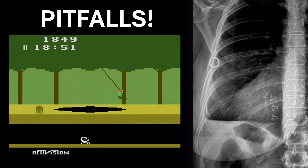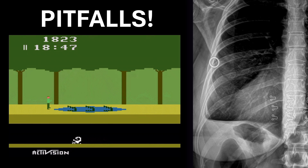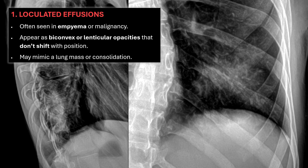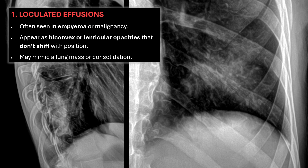Let's look at a few radiographic pitfalls that make interpreting pleural effusions more challenging. First is a loculated effusion, often seen in empyema or malignancy. These can appear as a biconvex or lenticular opacity that doesn't shift with position, making it look like a lung mass or consolidation — basically mimicking what a tumor of the lungs could look like.